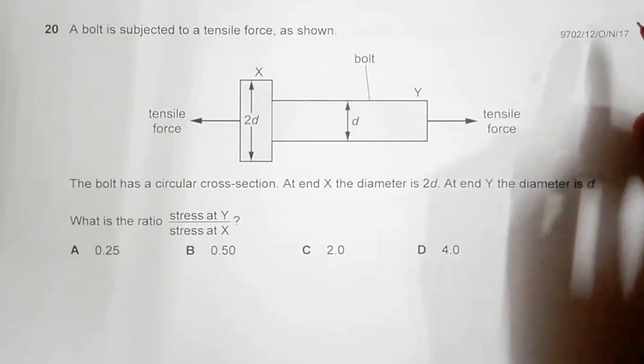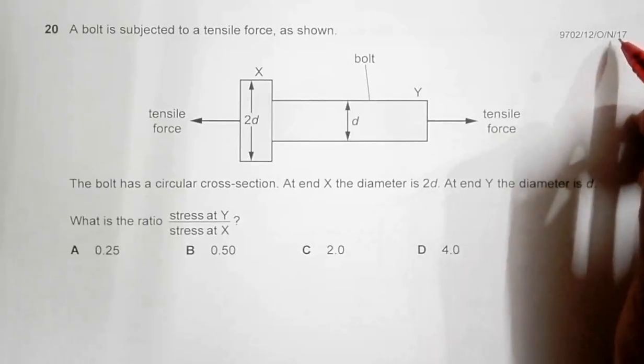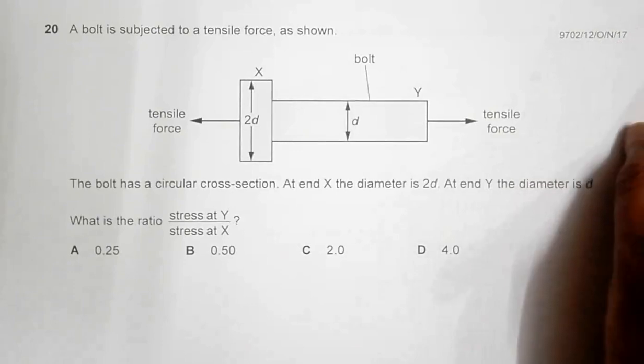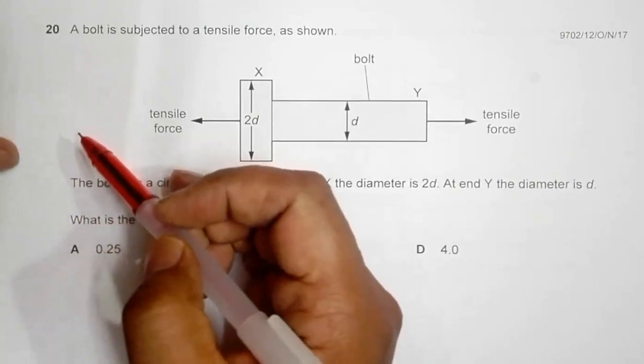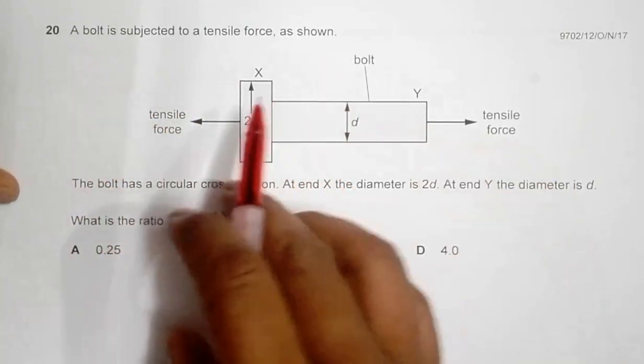This is the question from 2017 October November paper 1 2, question number 20. It is concerned with the chapter of elasticity. It says that a bolt is subjected to a tensile force as shown.